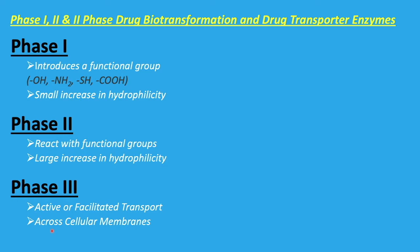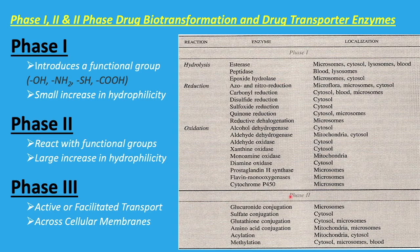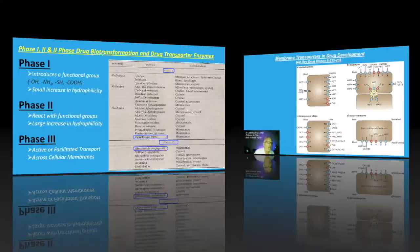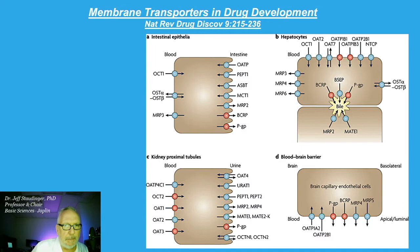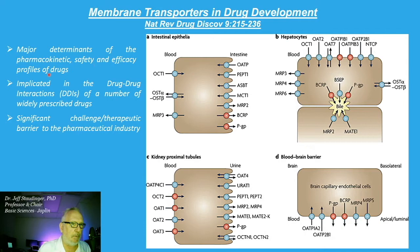The following chart summarizes phase 1 and phase 2 reactions that occur in our bodies. We're going to focus on phase 1 reactions, specifically cytochrome P450-mediated reactions, and phase 2 reactions including glucuronide conjugation. Regarding membrane transporters in drug development: intestinal epithelia, hepatocytes, kidney proximal tubules, and blood-brain barrier transporters are major determinants of the pharmacokinetic safety and efficacy profile of drugs, with huge implications in drug-drug interactions.